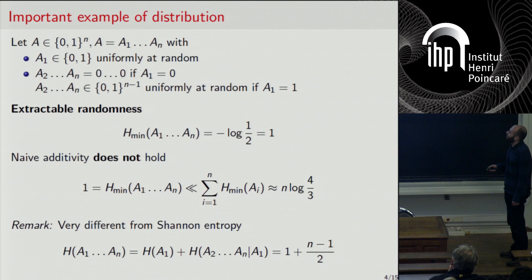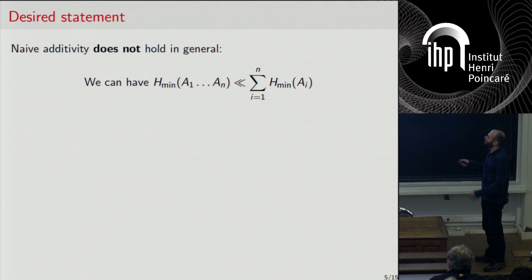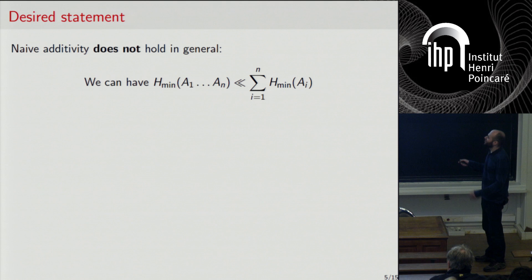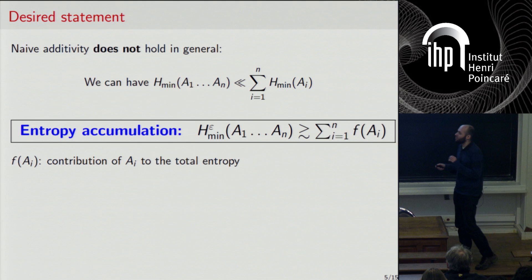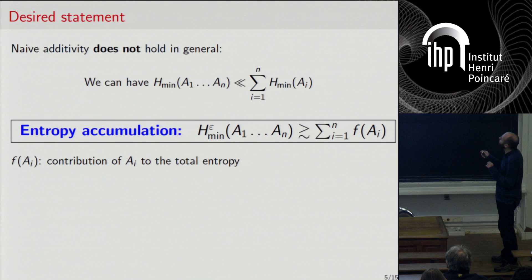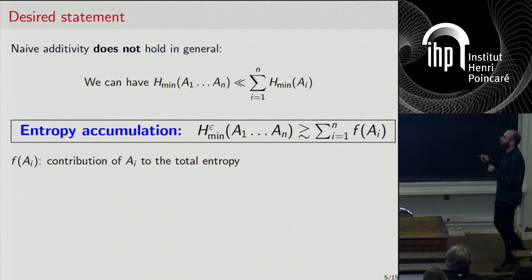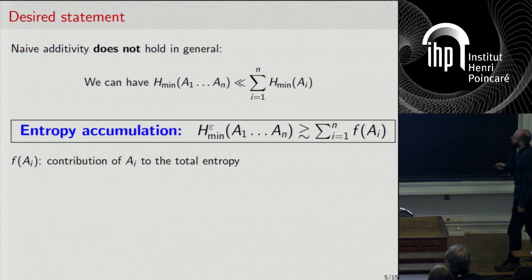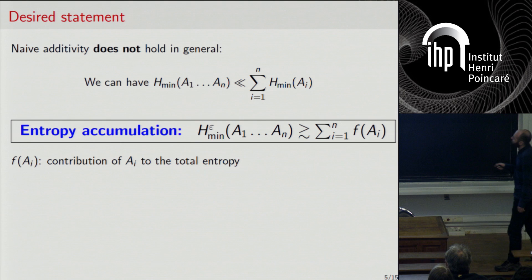We saw that naive additivity doesn't hold — we cannot just sum the individual min-entropies. But the main theorem I'll be stating says that if instead of computing the contribution of each part by the min-entropy of the marginal, we pick it differently using some function f that only depends on the A_i part, then this will hold. There will be some way of computing the contribution of each part such that the formula is true.